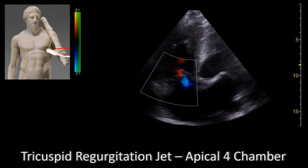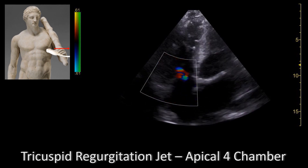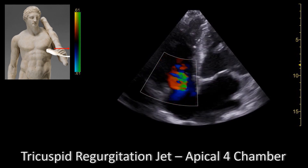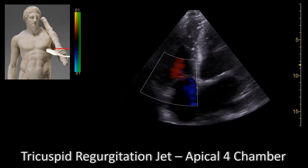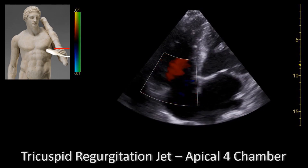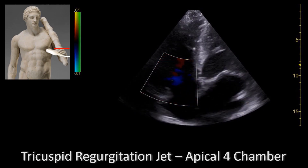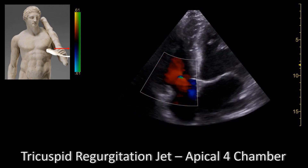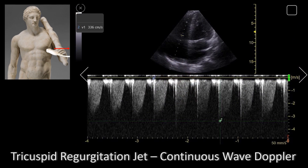Once you find the jet, you add continuous wave Doppler right through it. It is important to note that you must use continuous wave Doppler and not pulse wave Doppler. Continuous wave Doppler through a tricuspid regurgitation jet looks like this. It is important to note that the Doppler is a negative deflection since the jet is moving away from your probe.